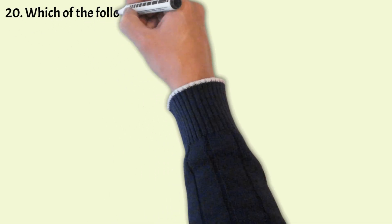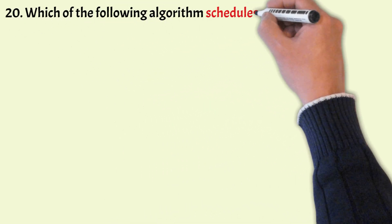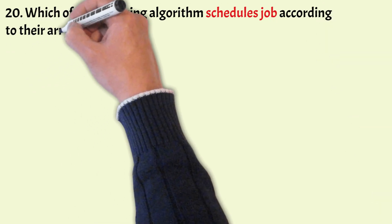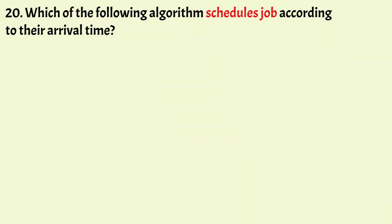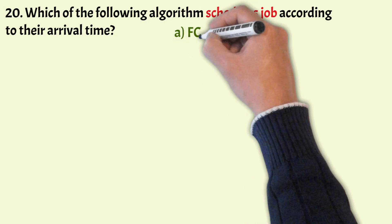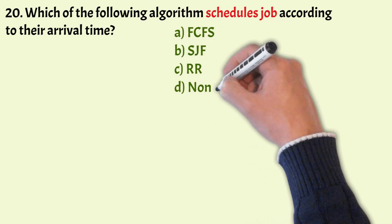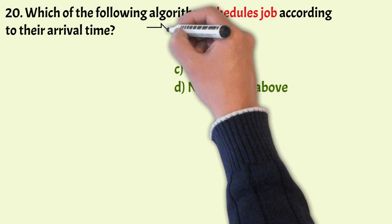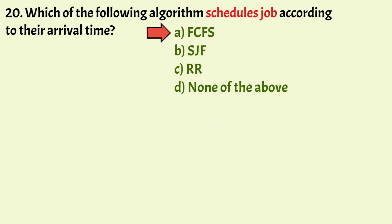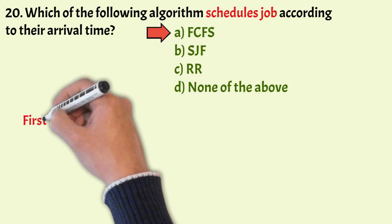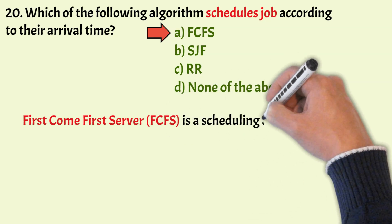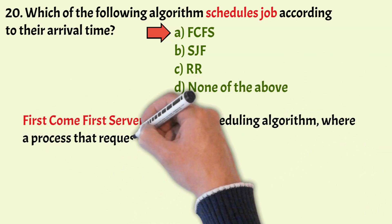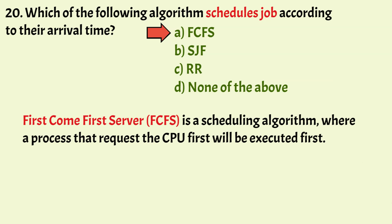The last question: which of the following algorithms schedules jobs according to their arrival time? The correct answer is Option A, First Come First Serve (FCFS). FCFS is a scheduling algorithm where a process that requests the CPU first will be executed first, and hence it schedules processes and requests according to their arrival time.